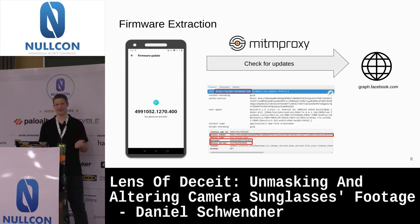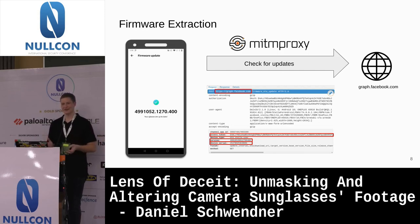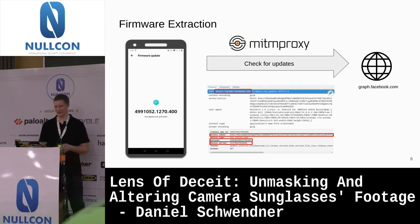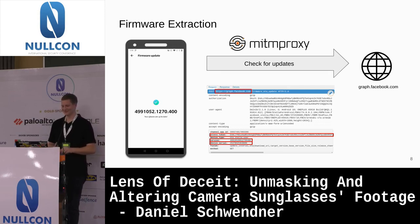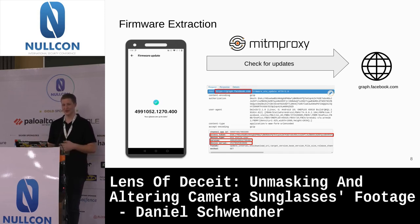I used Frida to disable SSL certificate pinning on the app so I could intercept all network communication with MitmProxy. I created a small hotspot on my PC, connected my phone to it, and opened the firmware update page. You can see the traced API call — we're sending a request to graph.facebook.com/firmware_OTA_update, providing an authorization token, access token, version, and serial number. In this case we were already on the latest version, so we only got a differential update, not the full firmware build.